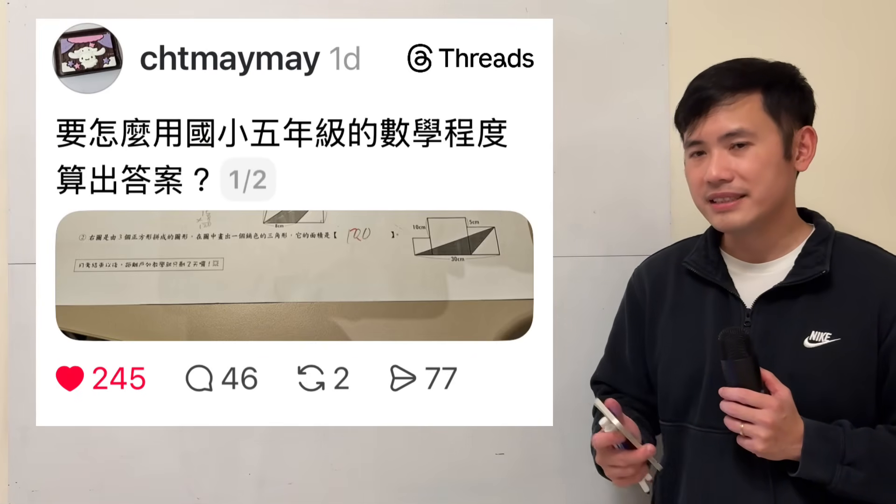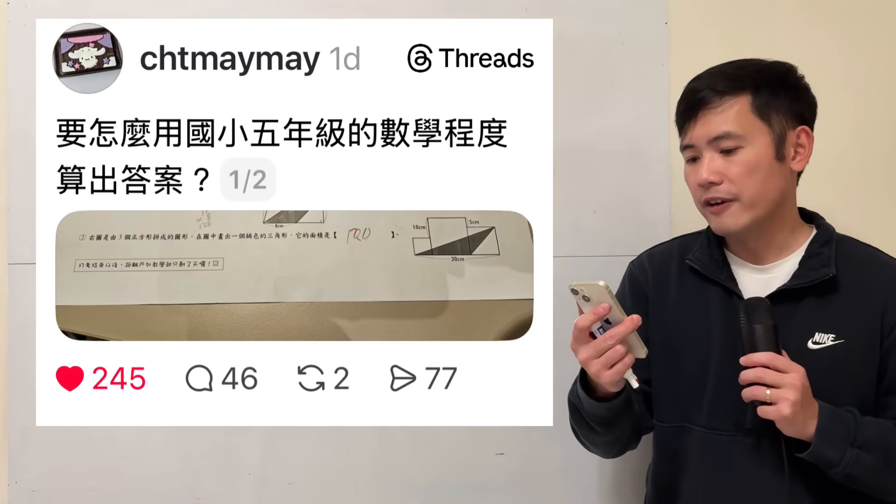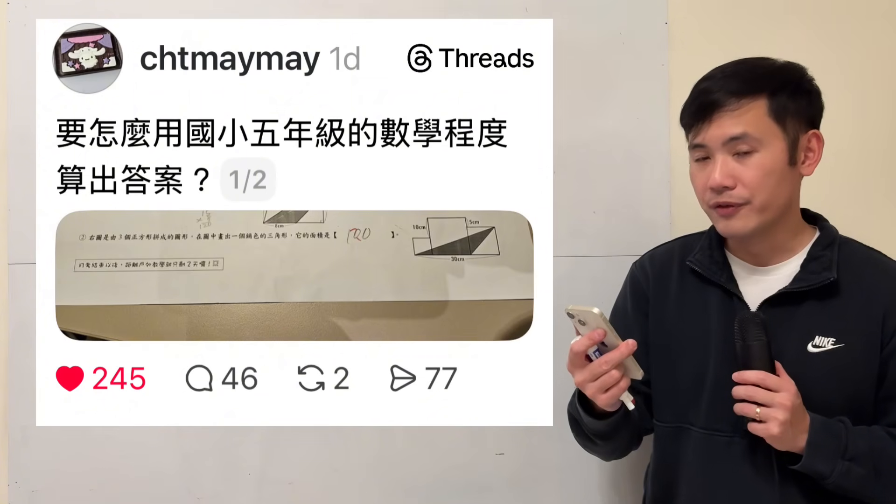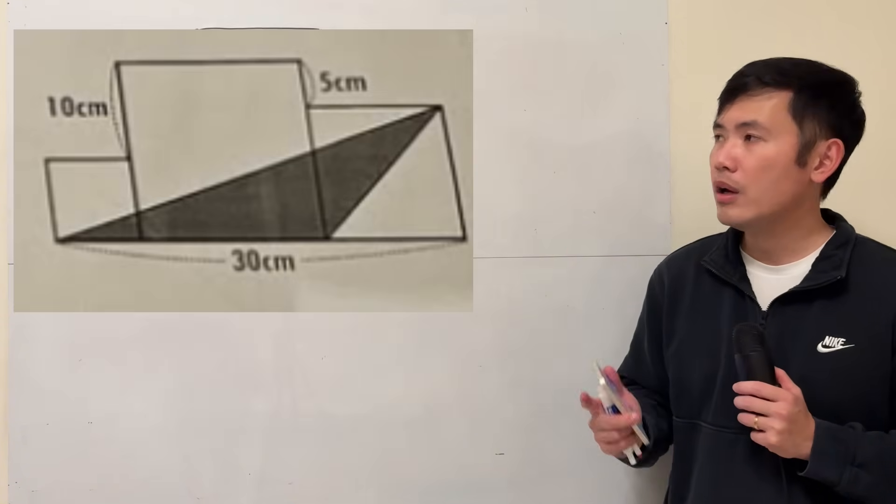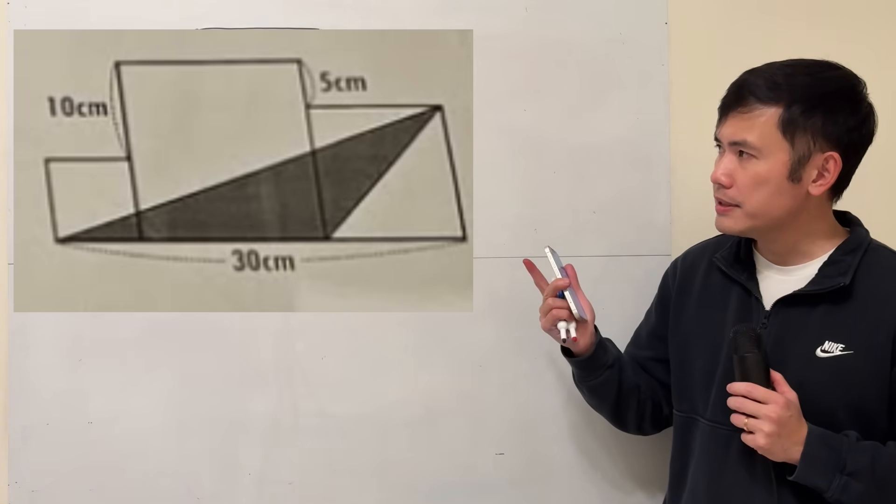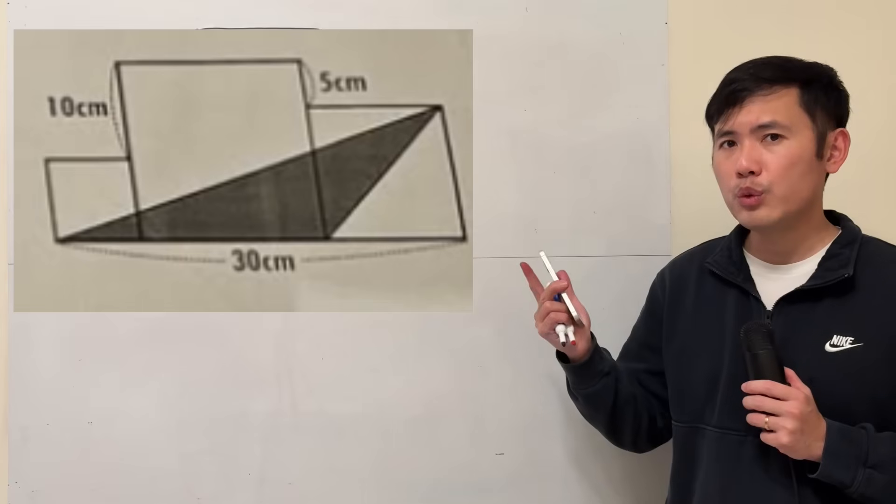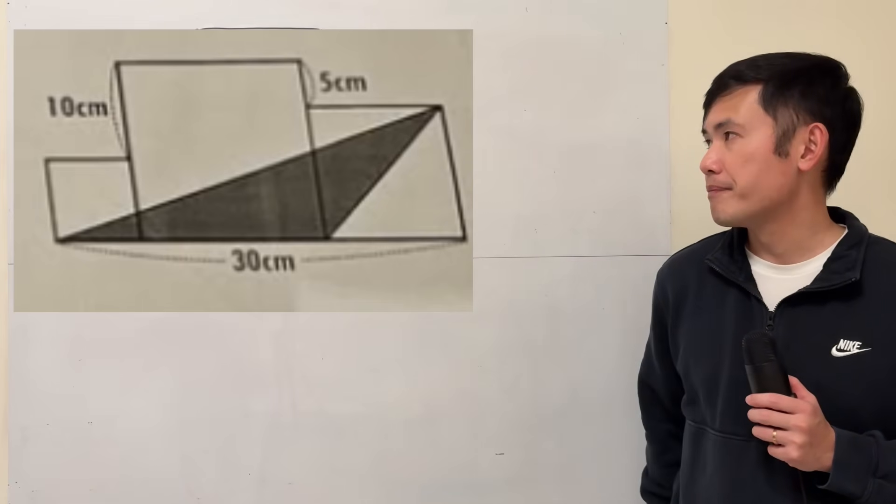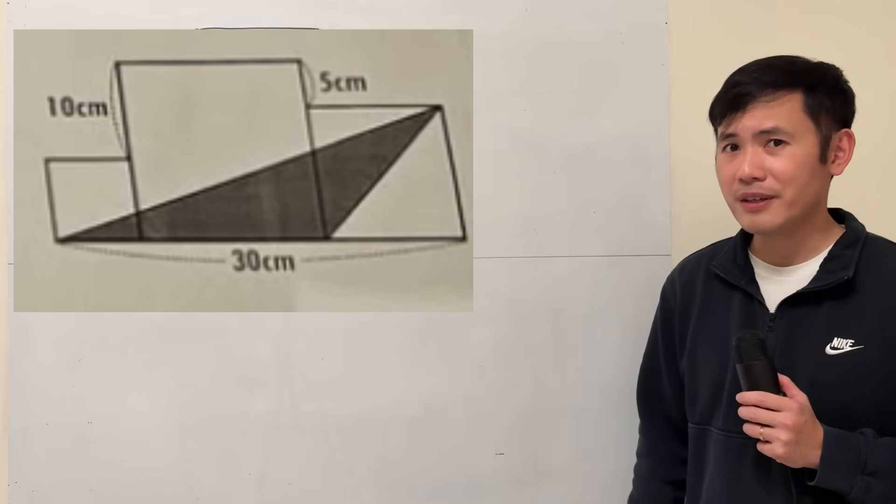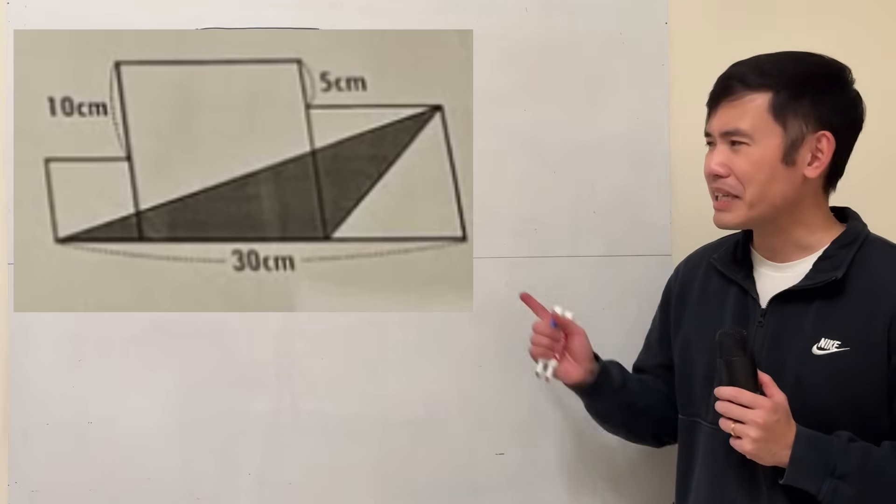I just saw this question on threads and it says how are we going to use fifth grade math to find the area of this triangle. We have three squares and we're trying to find the area of the shaded triangle. This is supposed to be a fifth grade question in Taiwan. Let's have a look.